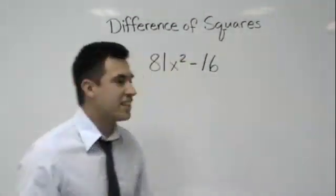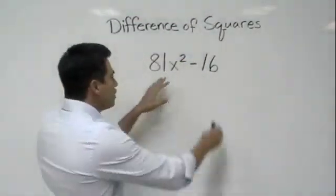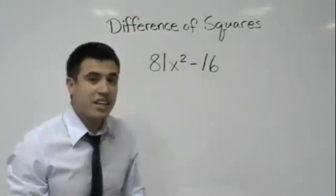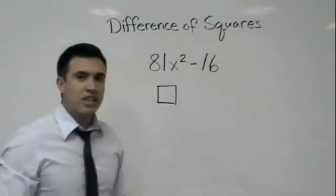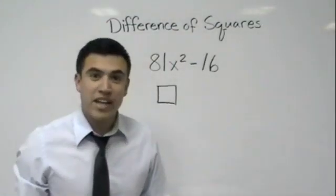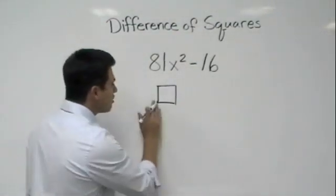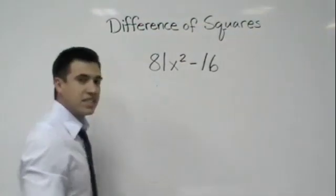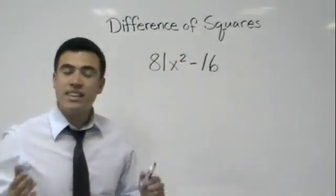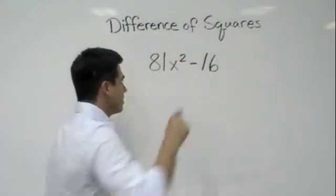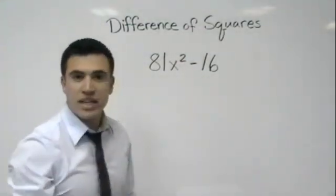Easy here. We have two perfect squares, and I'm not talking about squares that look like this. I'm talking about a square when you can take the square root of something. Always look to see if you have two perfect squares, and the key thing aside from that is the minus sign right there.